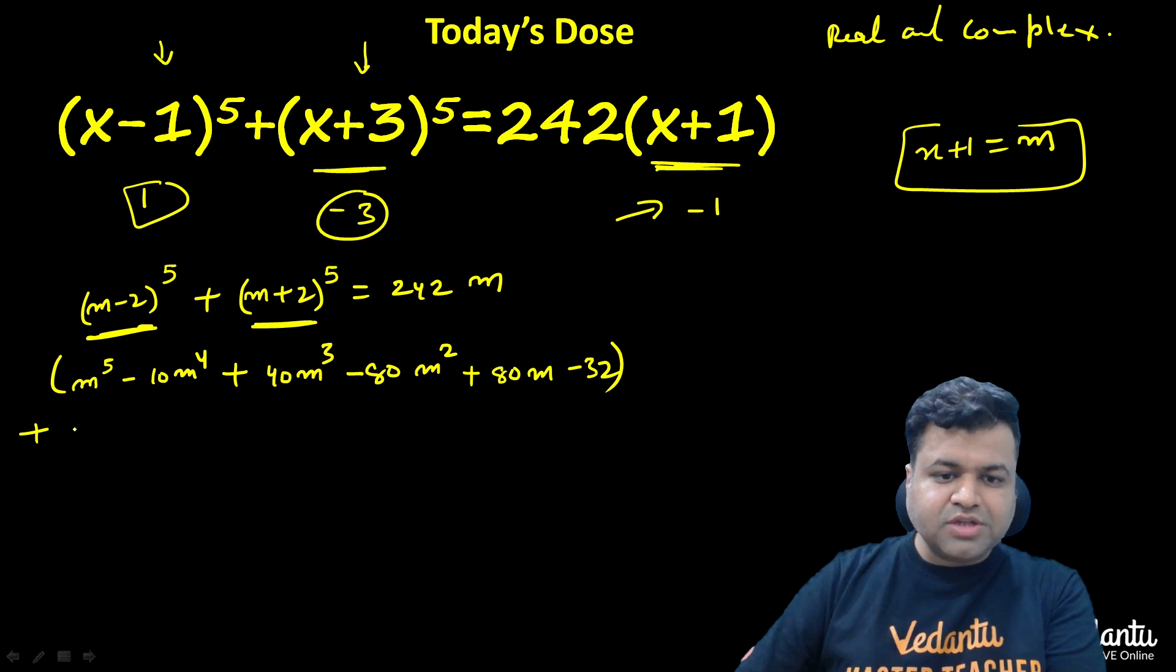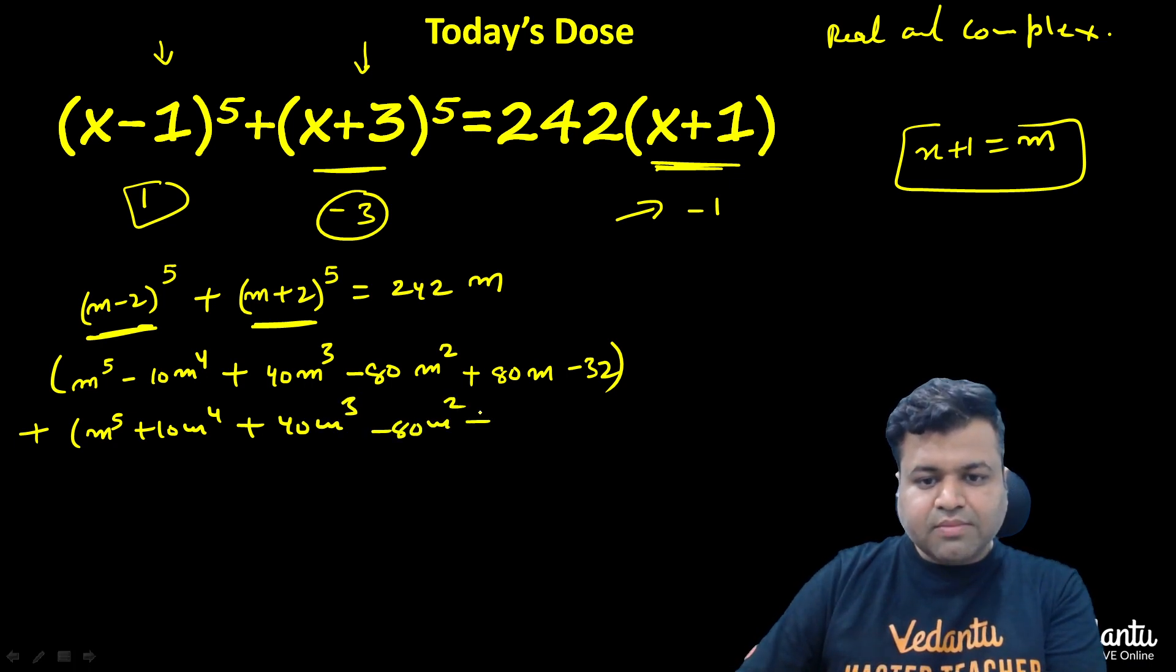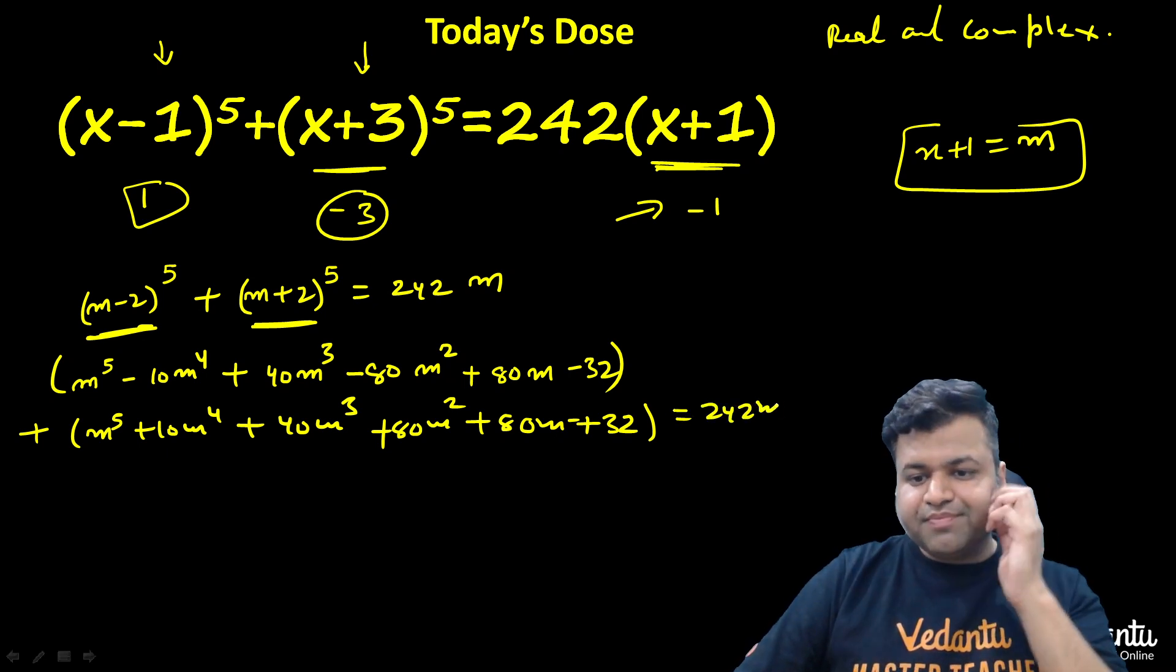And what is the expansion of (m+2)^5? That is nothing but m^5 + 10m^4 + 40m^3 + 80m^2 + 80m + 32. That is equal to 242m.